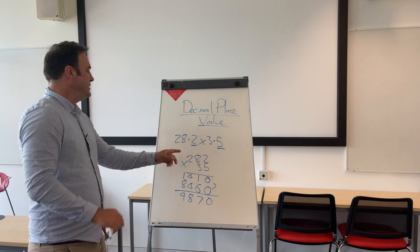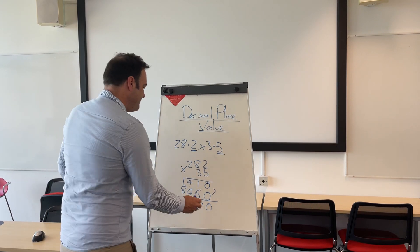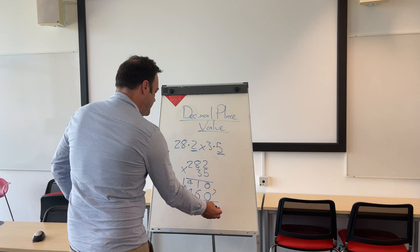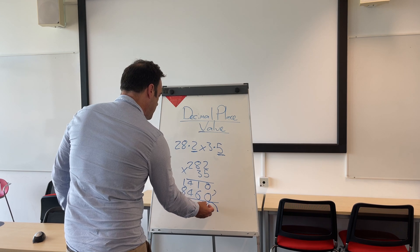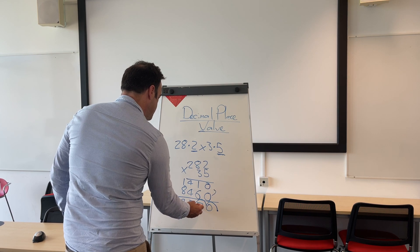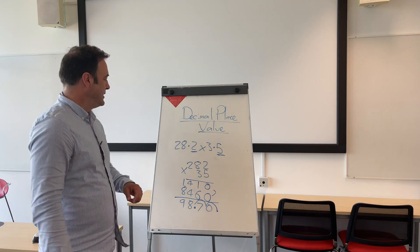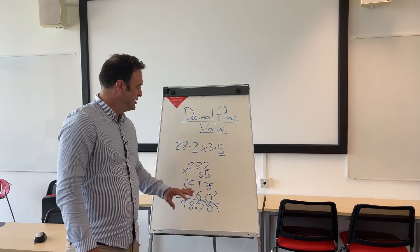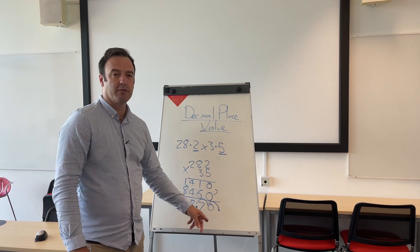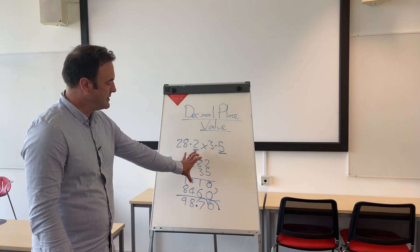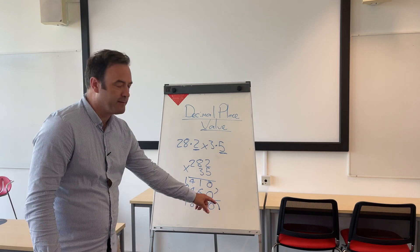Then what you do is look at the number of decimal places — you've got 2. So you start from the right-hand side of the whole number result, count 1, 2, and place the dot there. If you want a silly phrase: copy it out without the dot, bounce it back in at the end from the right.